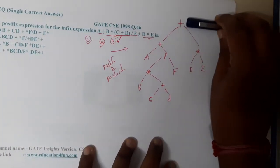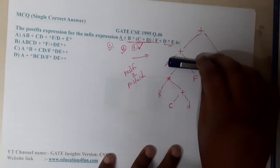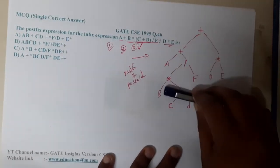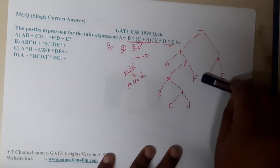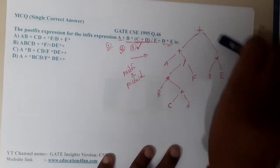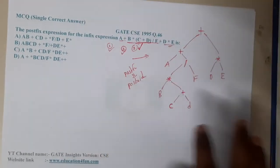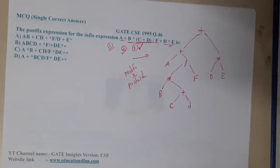It starts here, so first it will come A, after that B, after that C, D, plus, into, F, slash, plus, D, E, plus - sorry, into, plus. I have discussed this traversal which I am doing with arrows in our theoretical classes. If you haven't watched them, please watch it.